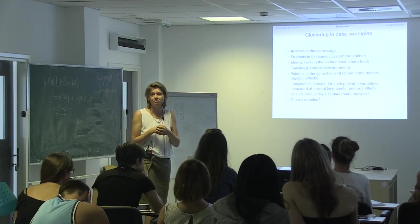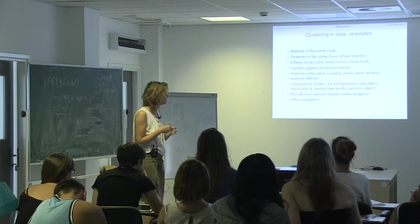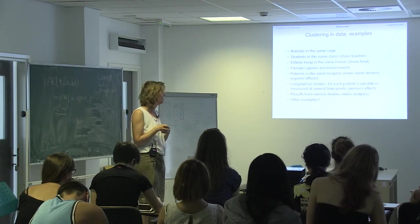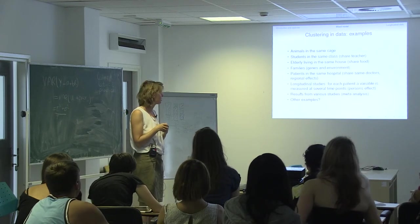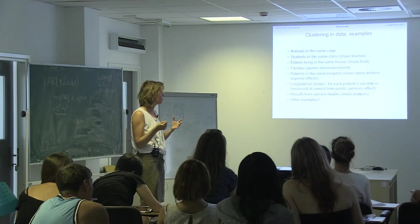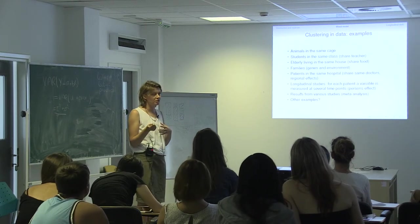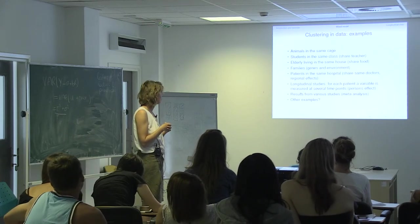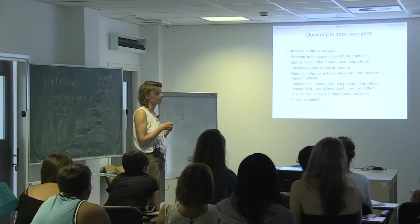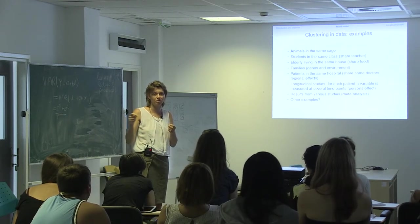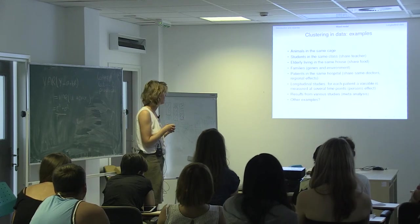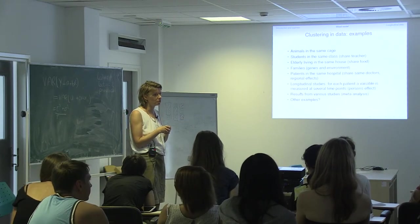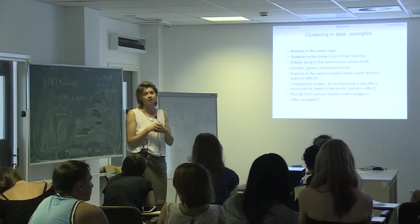I just had here sibling pairs, but of course there are many examples. Students in the same class — they share the teacher. Elderly living in the same house — they share the same food. Families: gene and environment. Patients in the same hospital — they have the same doctors. Sometimes the effects of the region where they come from. Longitudinal effects: the outcomes measured over time are coming from the same patient, so they share the same patient. Results from various studies — meta-analysis — you can also see that in the random and mixed effect models.